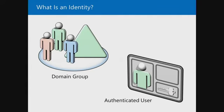In the past, you'd authenticate to your workstation, then to Active Directory, find your domain controller, log on, and it would build your access token with SIDs from group memberships. That's been our standard approach. The difference now is you're an authenticated user able to go to an individual server, request access to a share, and it checks your access token and NTFS permissions.